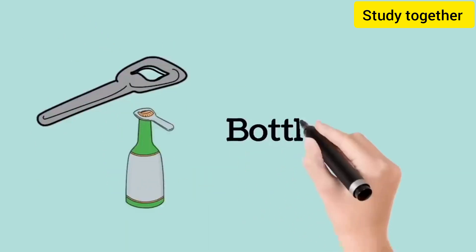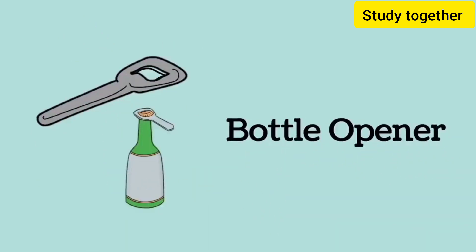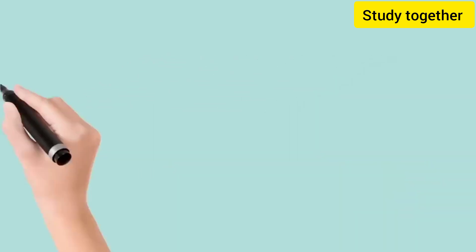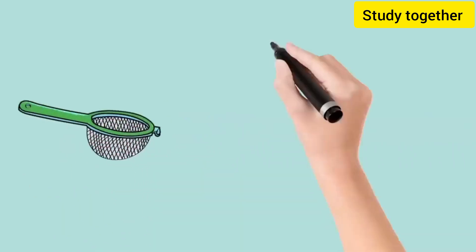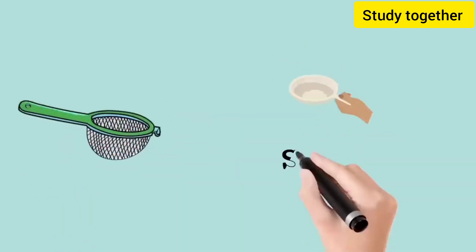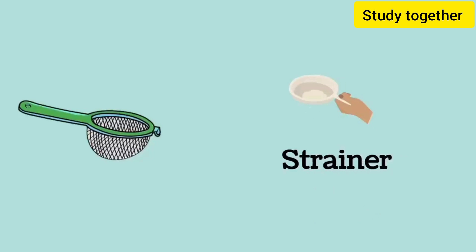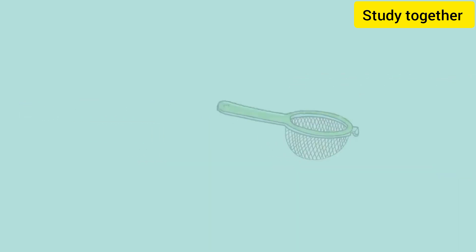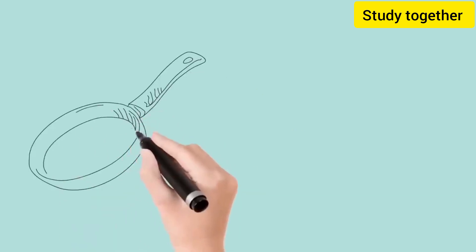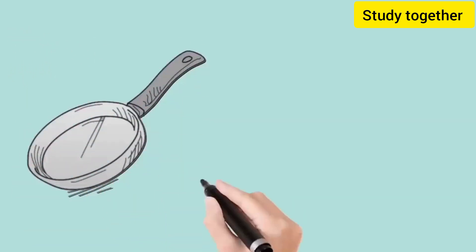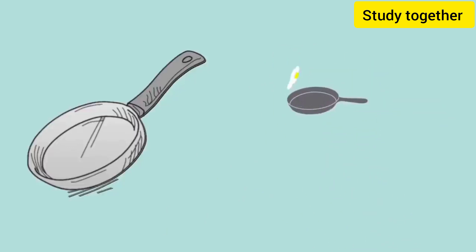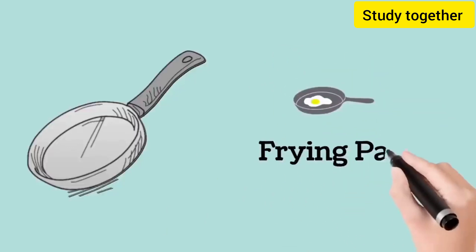This is a bottle opener, we call it bottle opener. This is a strainer, we call it strainer. This is a frying pan, we call it frying pan.